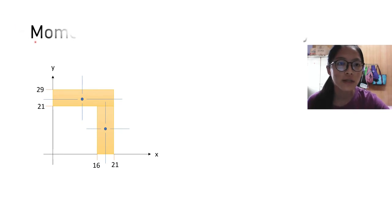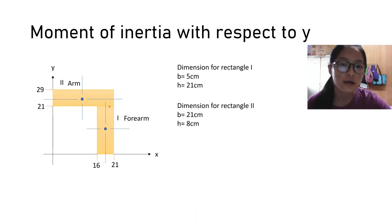Hi, I'm Cha Hueng. Now I want to talk about the moment of inertia with respect to Y. This structure comes from the part of forearm and arm. We consider both the forearm and arm as rectangular shapes. The X axis is aligned with the floor and the Y axis is aligned with the shoulder. The first rectangle is the forearm and the second is the arm. For the first rectangle, the base is 5 cm which is 21 cm minus 16 cm, and the height is 21 cm. For the second rectangle, the base is 21 cm and the height is 8 cm which is 29 cm minus 21 cm.